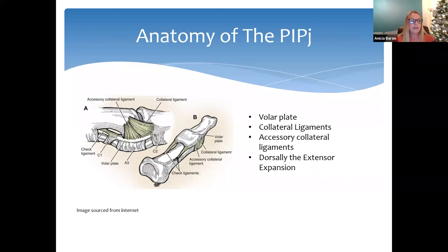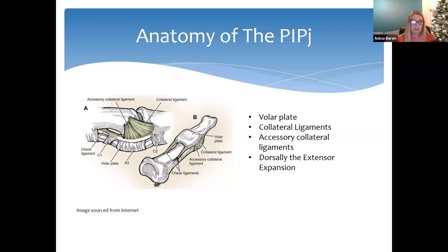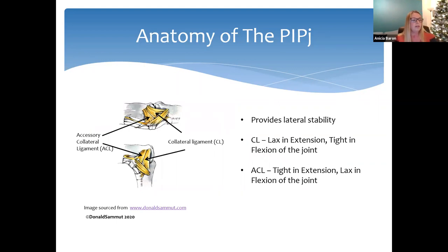The PIP joint is a complex hinge joint that allows a little translation and rotation. Stability is provided by surrounding structures. The volar plate is a fibrocartilaginous structure with a thicker distal attachment that thins proximally and splits into the checkrein ligaments, inserting onto the proximal phalanx. Its function is to provide stability and prevent hyperextension. The joint is further stabilised laterally by the collateral and accessory collateral ligaments, and dorsally by the extensor expansion. The collateral ligament is tight in flexion; the accessory collateral is tight in extension.